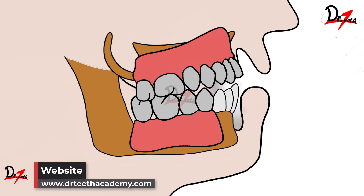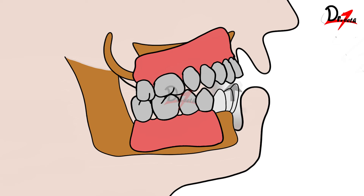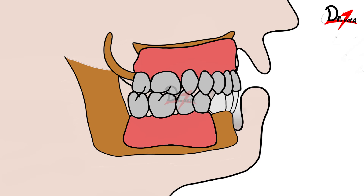When the mandibular anterior teeth have no antagonist, they tend to supra-erupt, and their periodontal support will lessen. After supra-eruption, they will again apply force in the anterior maxillary region, increasing resorption there once more — so it becomes a cycle.